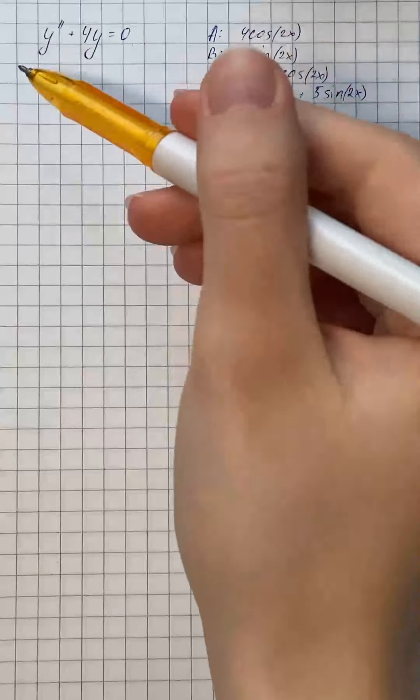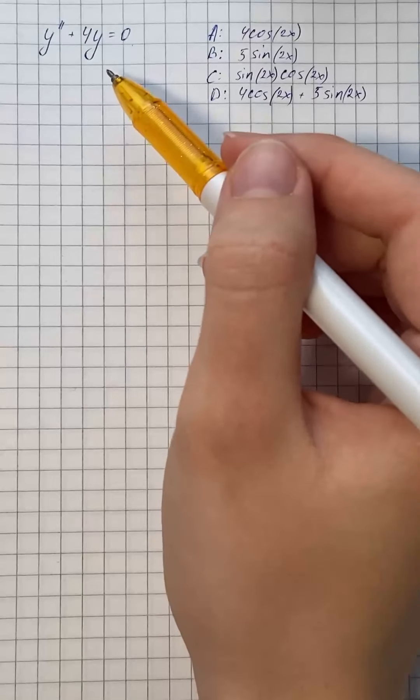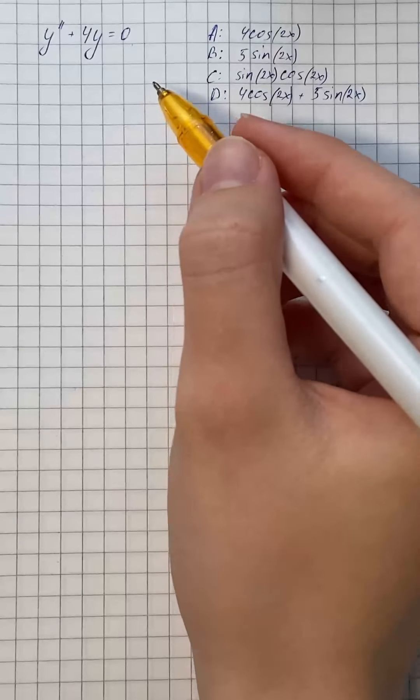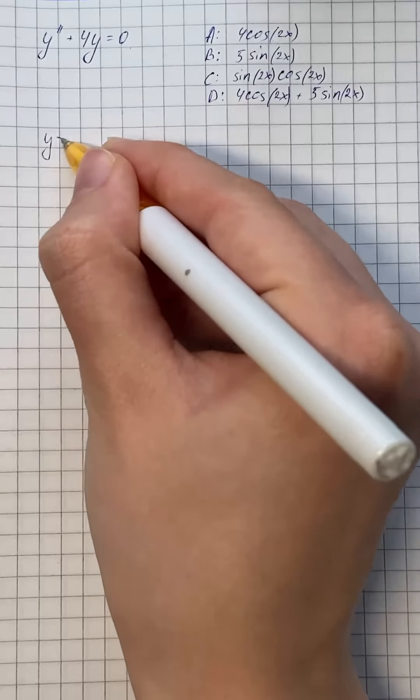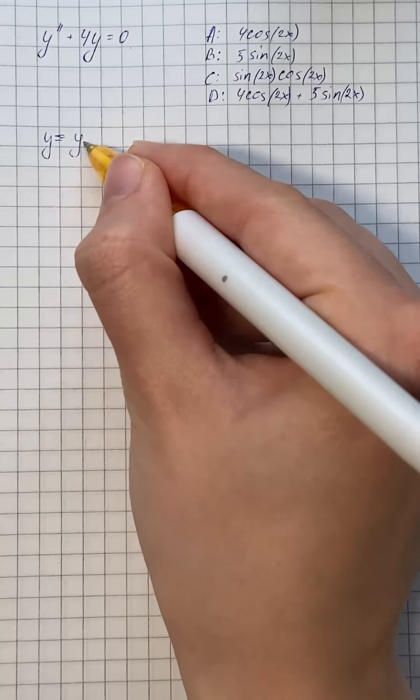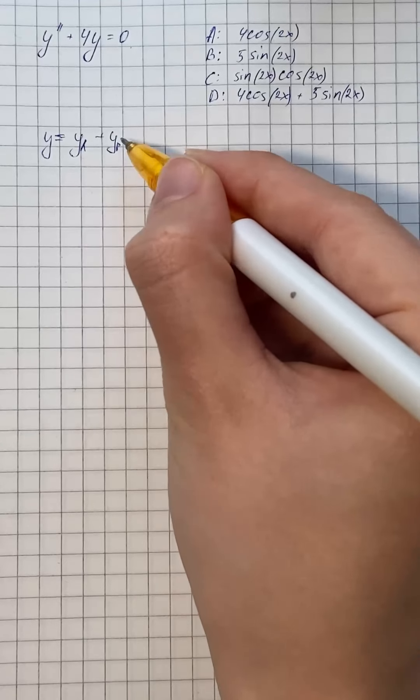The given equation is a second-order linear non-homogeneous differential equation with constant coefficients. So the general solution of the given differential equation can be written as sum of homogeneous solution and particular solution.